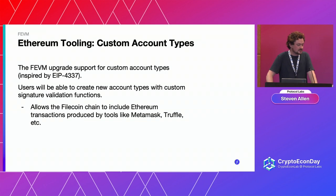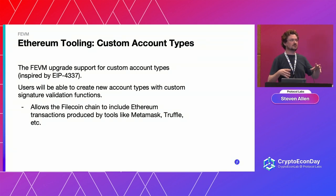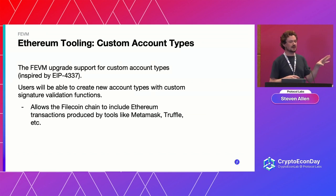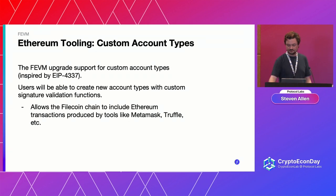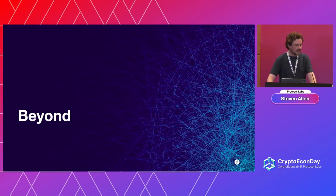The second part is custom account types. We've been inspired by EIP 4337 to create a system where you can basically deploy a custom account with a validate function that can validate off-chain messages. They don't necessarily use the standard signature formats. This again allows us to just send a message from Ethereum tooling and it just works.